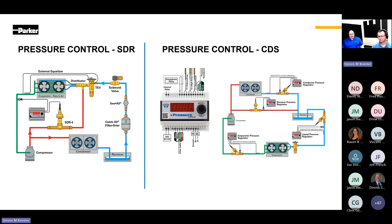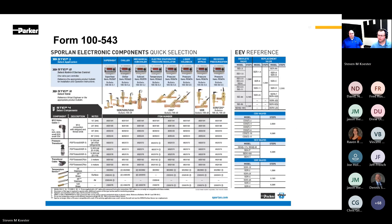The pressure control SDR schematic: on the left, we have a pressure control paired with an SDR. This is one variation of what a hot gas bypass system can look like. The SDR valve regulates off the suction pressure. More information about the additional components and applications for each controller can be found in Form 100-543 on Sporlin.com.